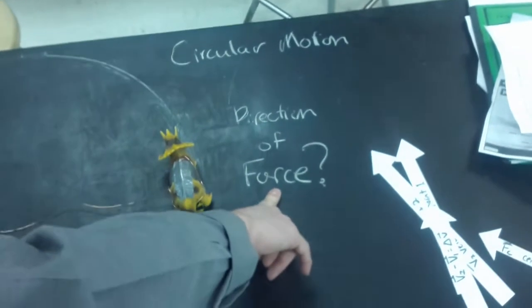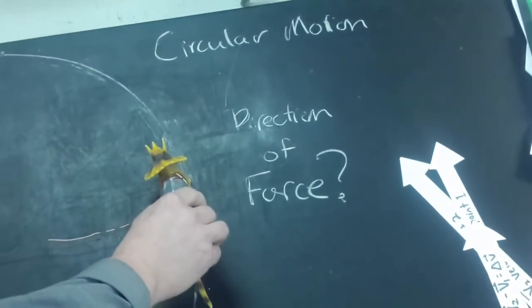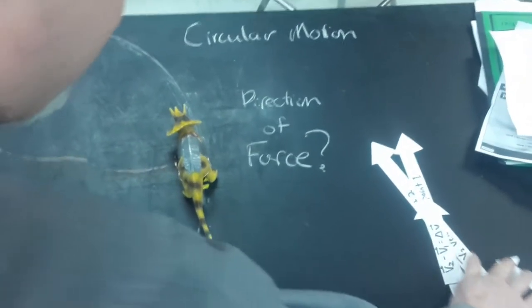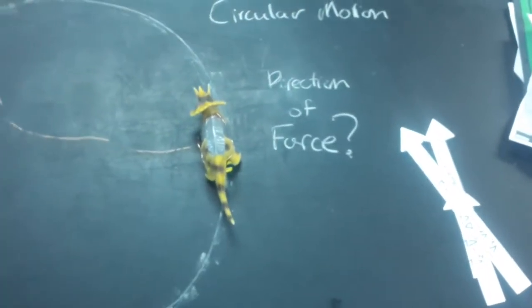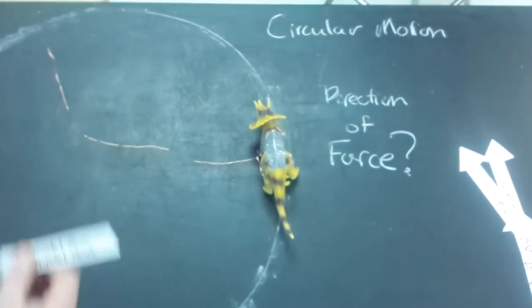what's the direction of the force on the dinosaur in order to keep it in circular motion? Now quite often there's an awful lot of explanations that deal with this sort of abstract, there are abstract arguments that use vectors.